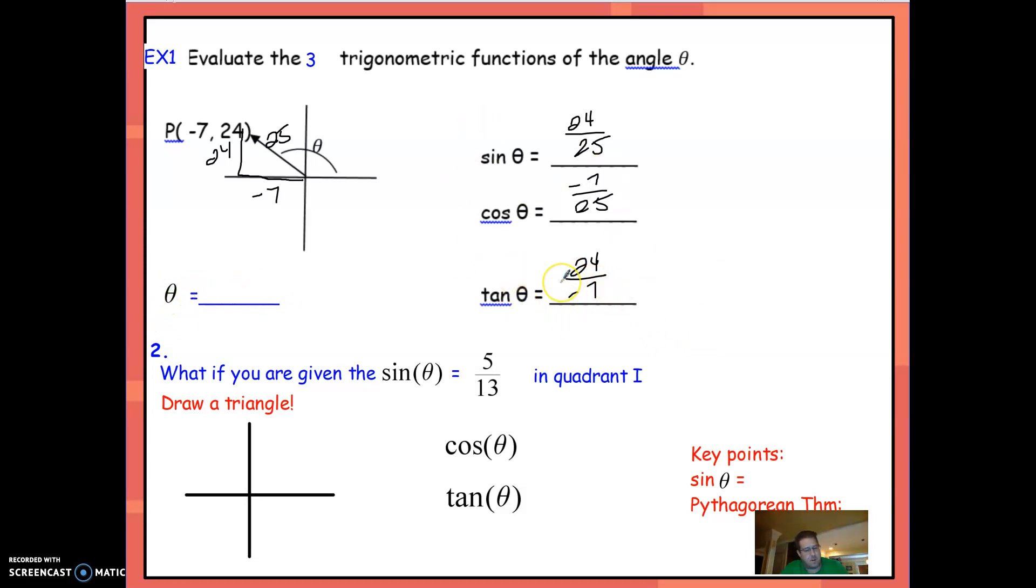If I wanted to find theta, I could use any one of these. Keep in mind, this is going to give us our reference angle, not theta. So we'll have to do an extra step. I'm going to use inverse sine of 24 divided by 25, which gives me about 73.7 degrees. Now remember, this is in the second quadrant. So you have to do 180 minus the 73.7 degree angle. So if you do 180 degrees and take away this reference angle, you're left with theta, which is about 106.3 degrees.